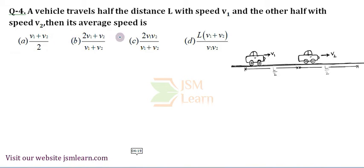In question, they have said that a vehicle travels half of the distance L with speed V1, and remaining half with speed V2. Then, they are asking the average speed.